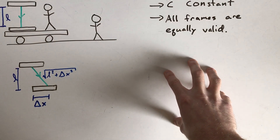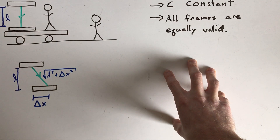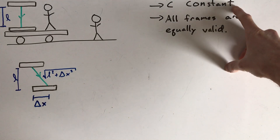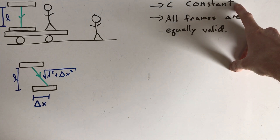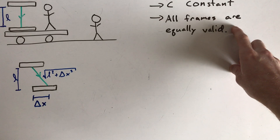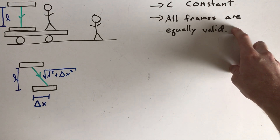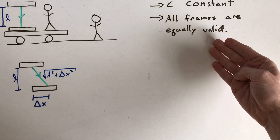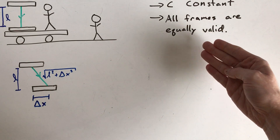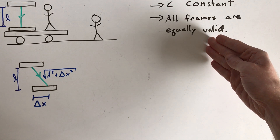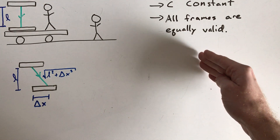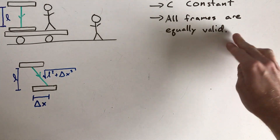The goal of this video is to derive an equation for time dilation for special relativity, using Einstein's postulates. One of them is that the speed of light is constant for all observers, and the other is that all inertial frames are equally valid — meaning frames moving at a constant speed can be considered equal. Accelerating frames are different, but special relativity doesn't deal with those situations.